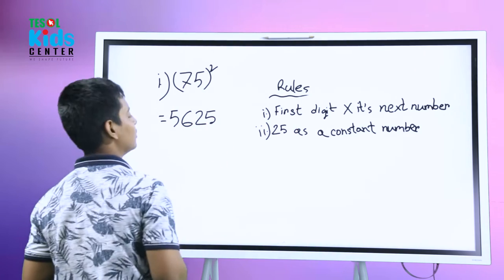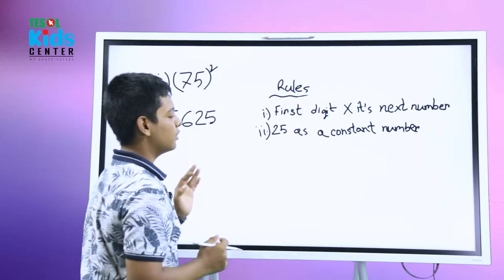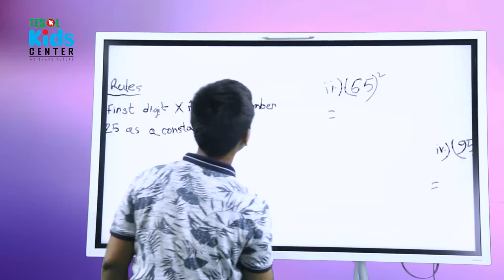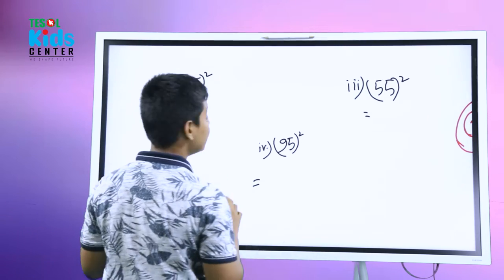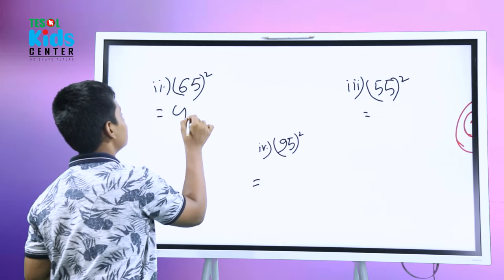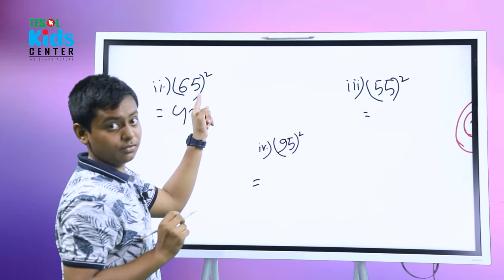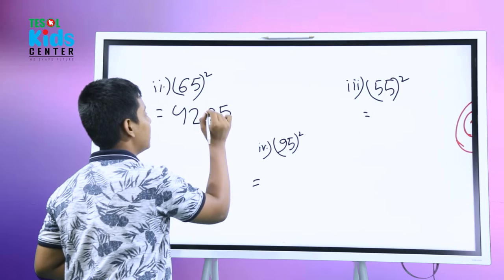So let's go for some more. Very easy. Six will be multiplied with its next number, and its next number is seven. So six sevens are 42, and that's five. No problem, we'll just put here 25 as a constant number, that means permanent number.